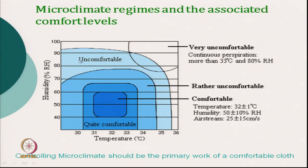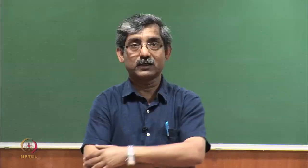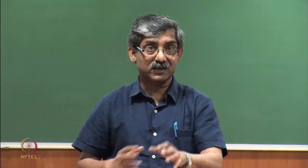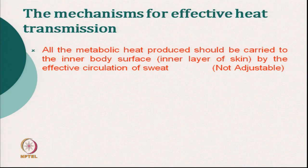The humidity of the microclimate should be kept at 50 plus or minus 10 percent — that is 40 to 60 percent relative humidity — which is the most comfortable zone. At 36 degree Celsius even at lower humidity we will feel uncomfortable. At 30 degree Celsius if humidity is very high we will feel uncomfortable. Our clothing must be designed to control our microclimate humidity and temperature to keep ourselves at least thermophysiologically comfortable.